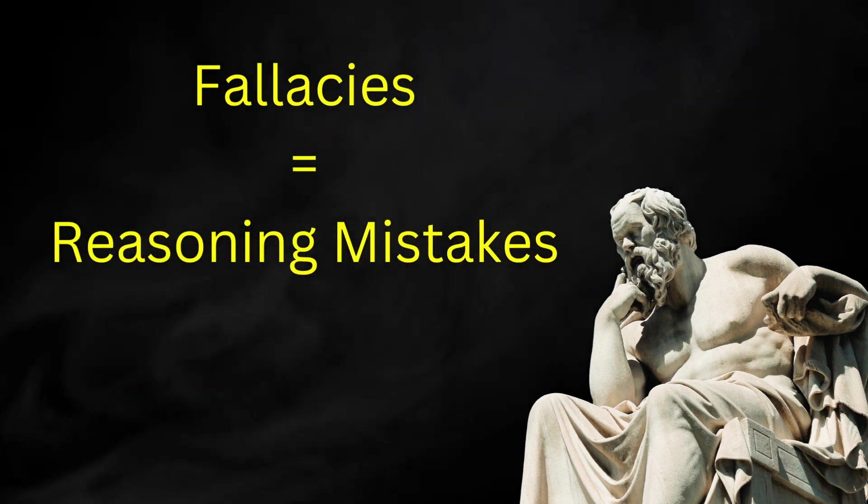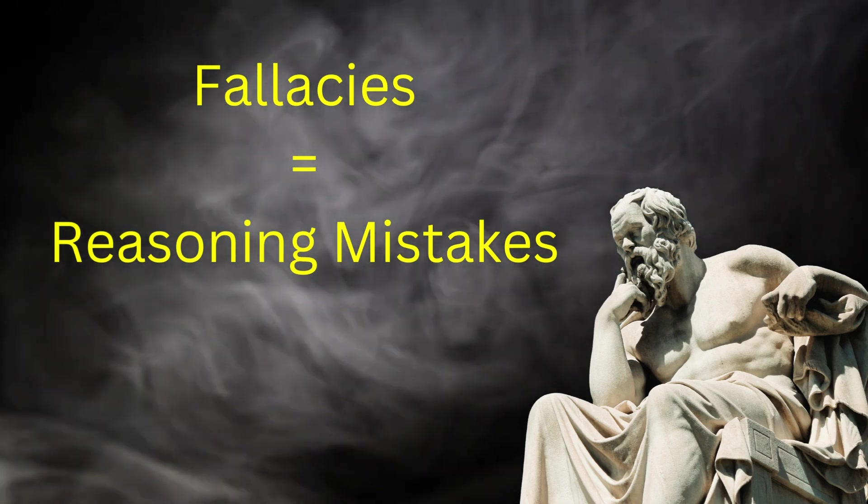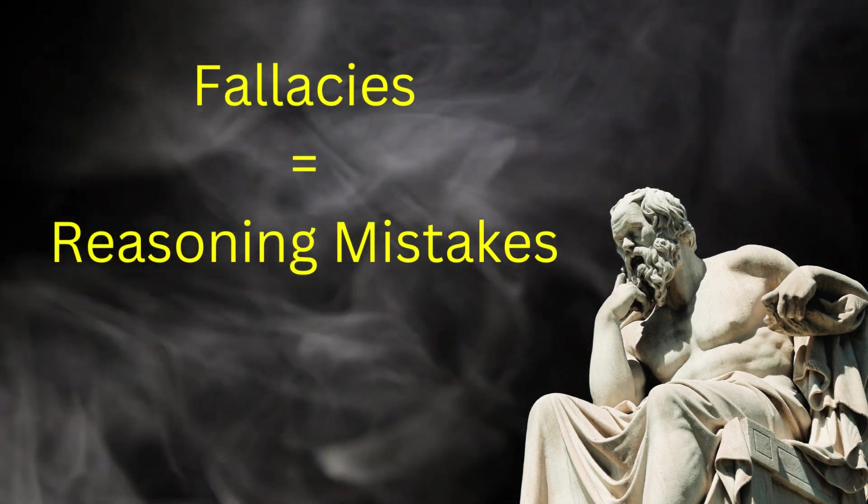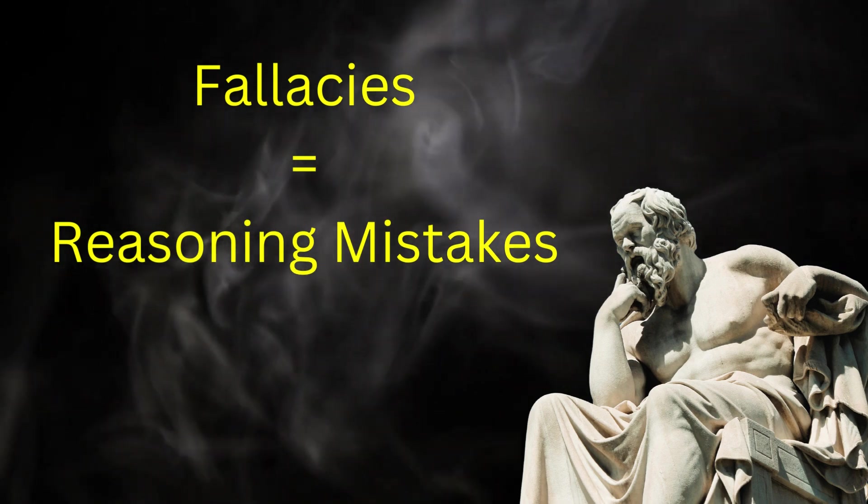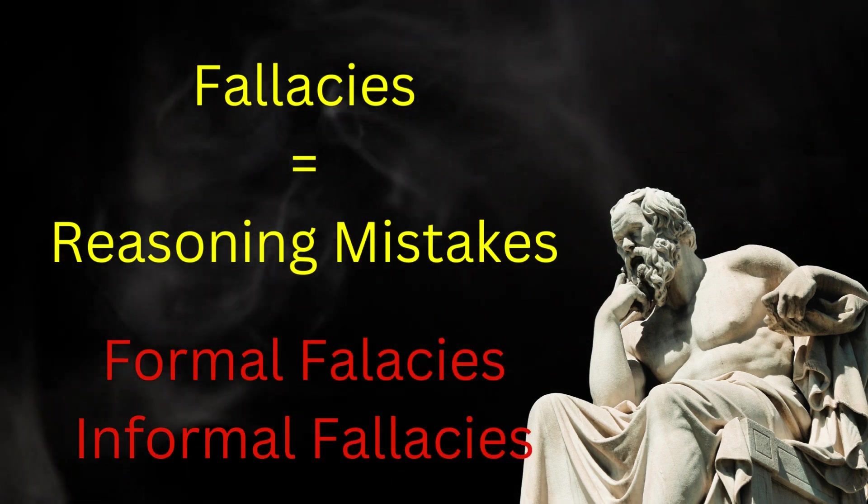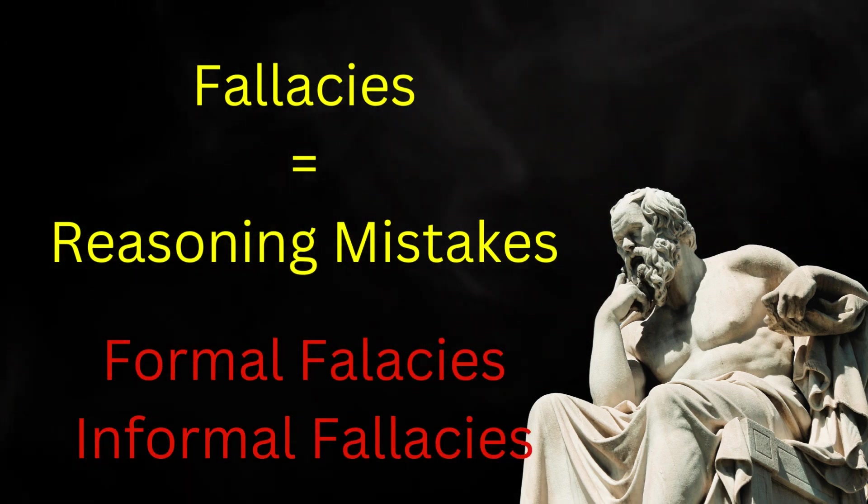Finally, let us briefly discuss fallacies. Fallacies are arguments which can appear to prove their conclusion but in fact do not. There are two major types of fallacies: formal fallacies and informal or material fallacies.